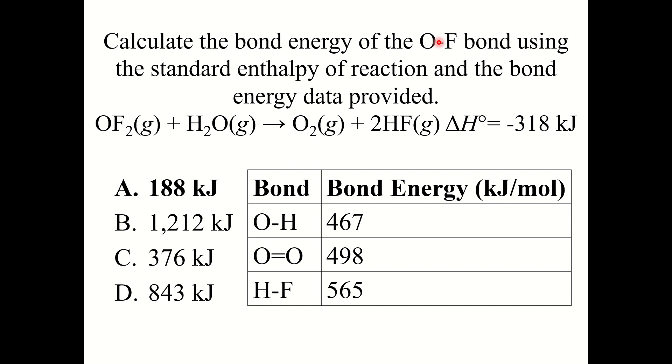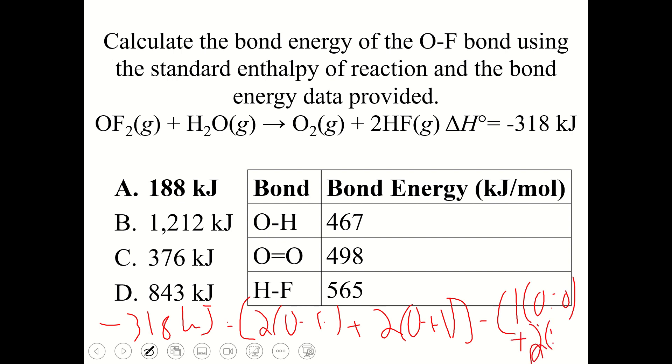The correct answer is A, 188 kilojoules. Your equation should have looked like negative 318 kilojoules equals two O–F bonds plus two O–H bonds, minus one oxygen to oxygen double bond plus two hydrogen to fluorine single bonds. This handwriting is not the easiest to read, working with the touch screen here, and I ran out of space a little bit. But this is how your equation generally should have looked. Negative 318 kilojoules equals the sum of the bonds broken, so two oxygen to fluorine bonds, plus two oxygen to hydrogen bonds.